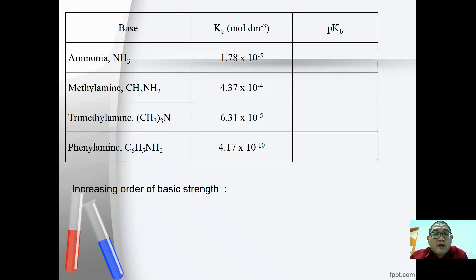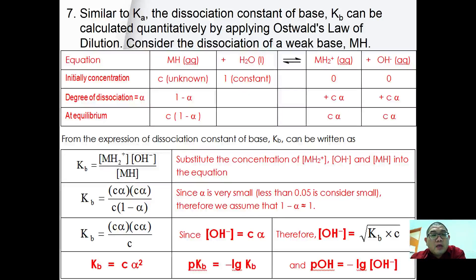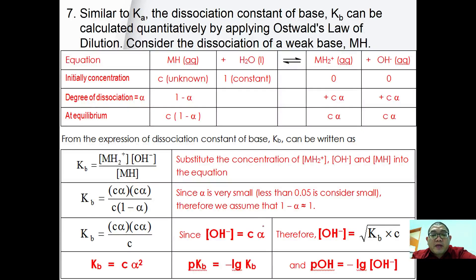Examples include ammonia, methylamine, trimethylamine, and phenylamine, with their pKb values calculated as shown. The increasing order of basic strength is: phenylamine, ammonia, trimethylamine, and methylamine (strongest). Similar to Ka, using Ostwald's law of dilution for bases: [OH⁻] = Cα, [OH⁻] = √(Kb × C), Kb = Cα², pKb = −log(Kb), and pOH = −log[OH⁻].